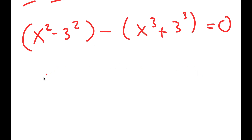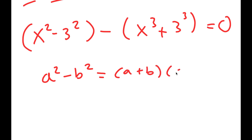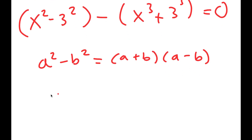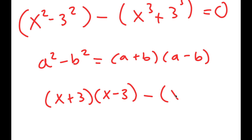Now if I have something in the form a squared minus b squared, this is equal to a plus b times a minus b. So I get x plus 3 times x minus 3, minus x cubed plus 3 cubed, is equal to 0.